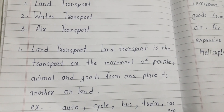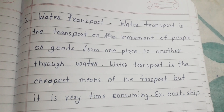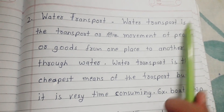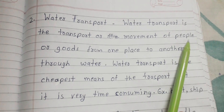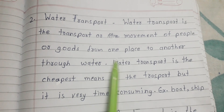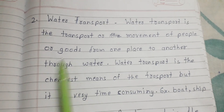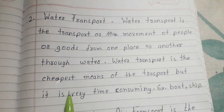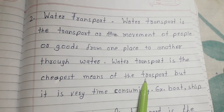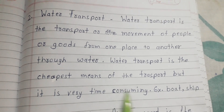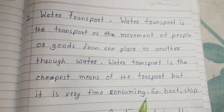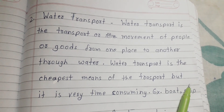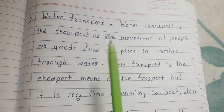Let's see water transport. Water transport is the transport or the movement of people or goods from one place to another through water. Water transport is the cheapest means of transport, but it is very time consuming. Examples are boat, ship, submarine, yacht, etc.